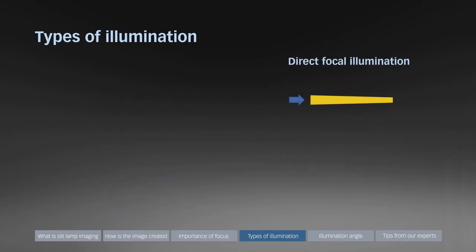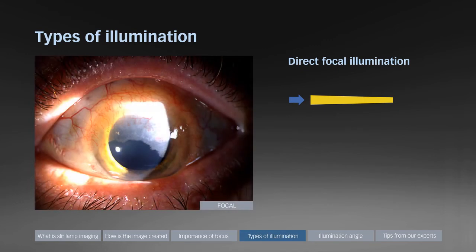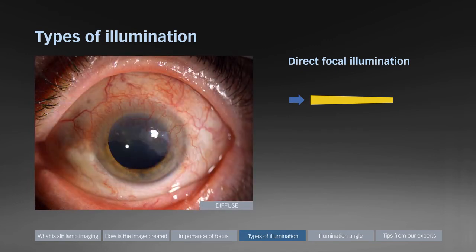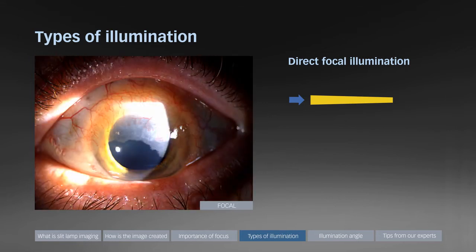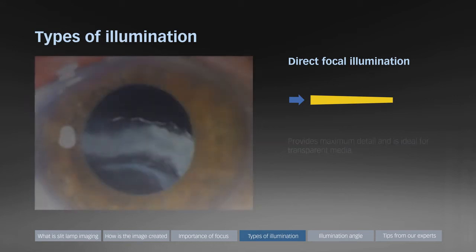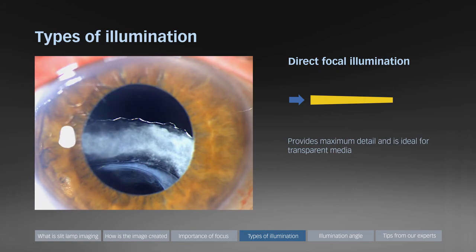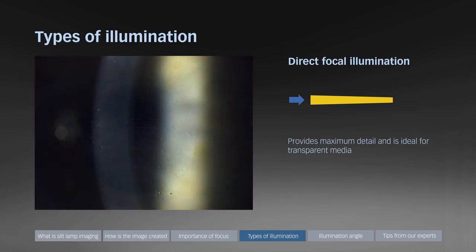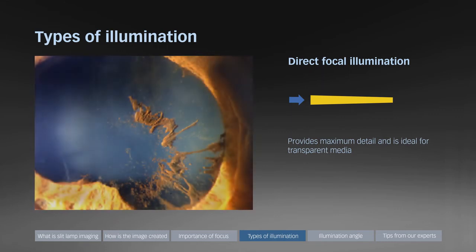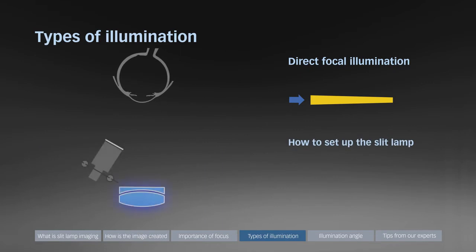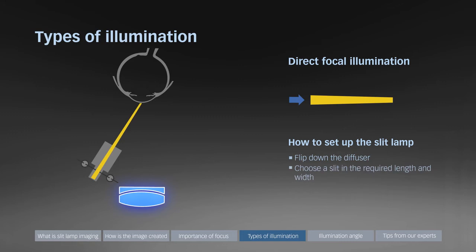Direct focal illumination is a bright focused light. Note how the direct focal illumination enhances the sharpness of the new vessels growing into the cornea. Direct focal illumination increases the contrast and in many cases can make more detail visible. It has the ability to show structure and detail in media that would appear transparent under diffuse illumination. To set up the slit lamp for direct focal illumination, flip down the diffuser, choose a slit in the required length and width, and add a small amount of background illumination if required.